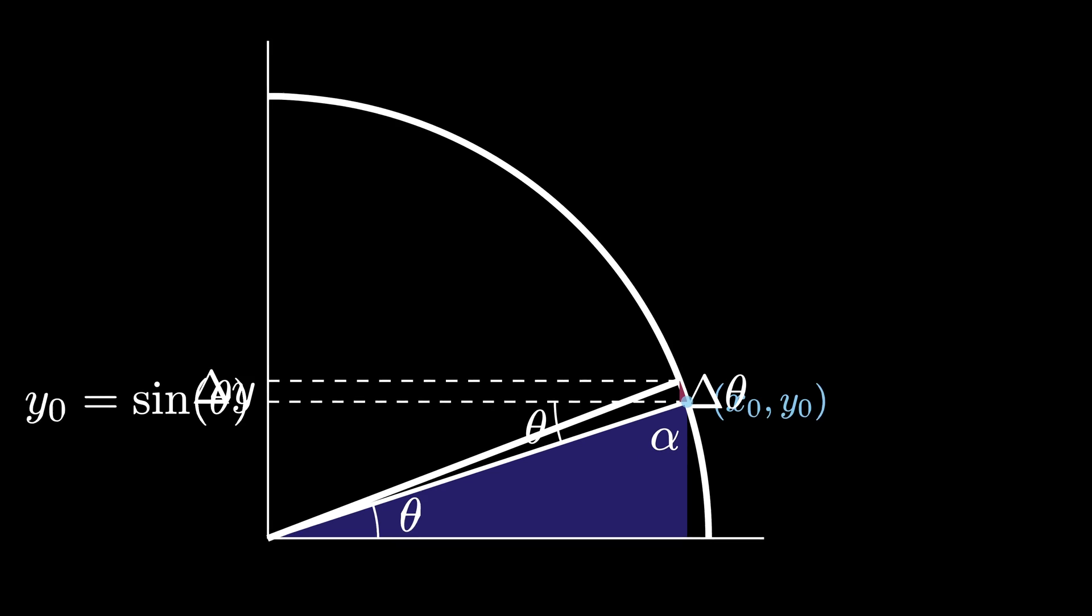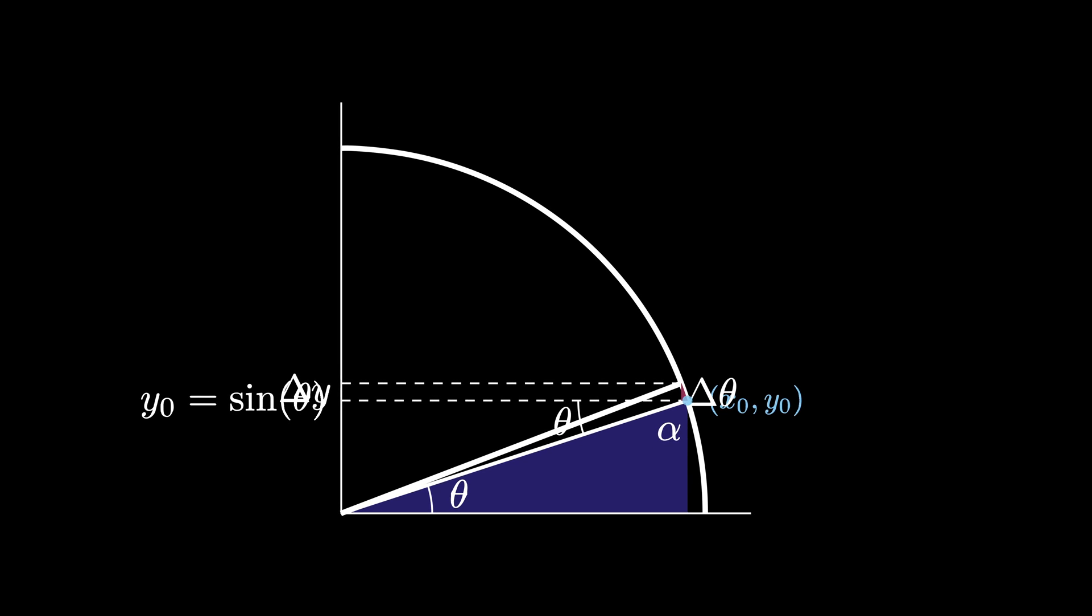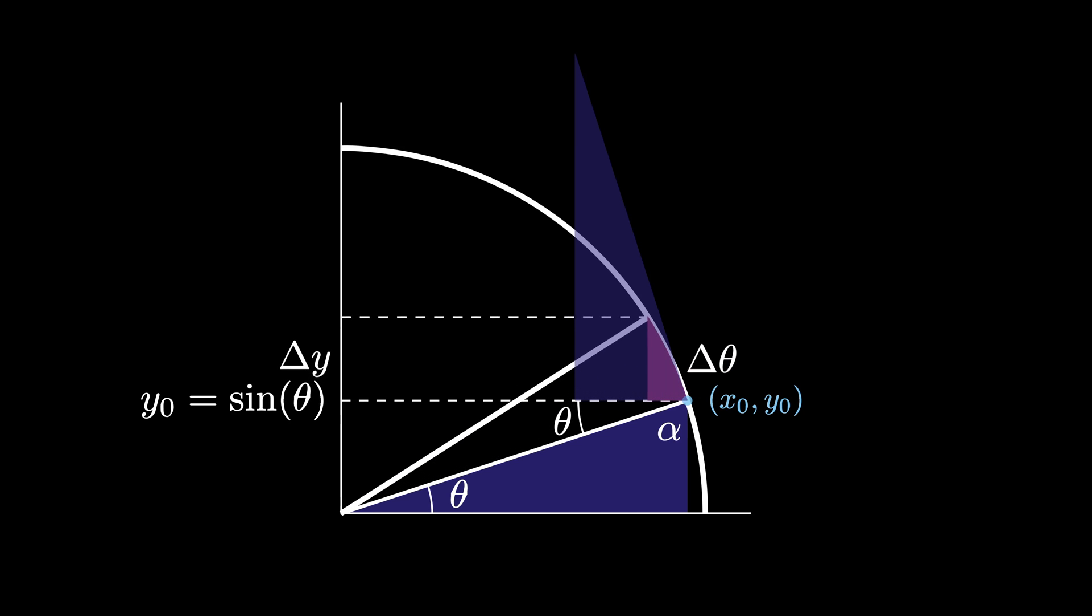The triangle that that triangular wedge approaches has a hypotenuse perpendicular to the circle at the point x0, y0. This means that one of the non-right angles is complementary to theta according to this picture, so that it's an angle of alpha, making that triangle similar to the original right triangle mapped out by x0, y0. This means that the triangular wedge region has an angle mapped out by alpha. Remember that it also has a height of length delta y and the arc length of delta theta.